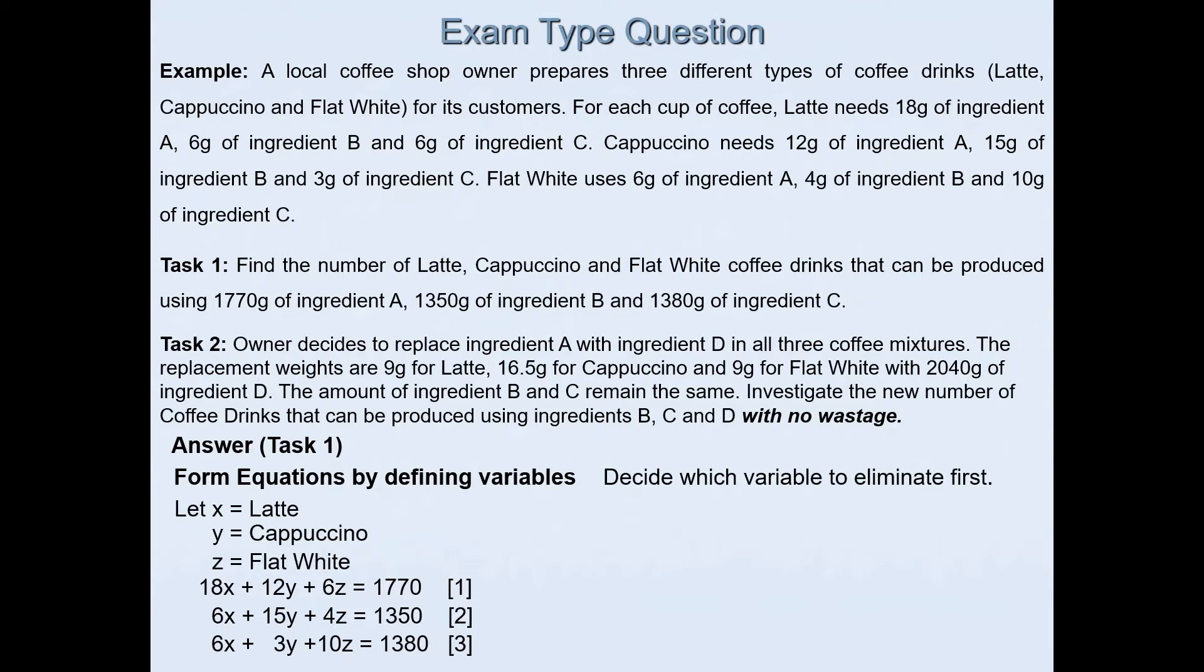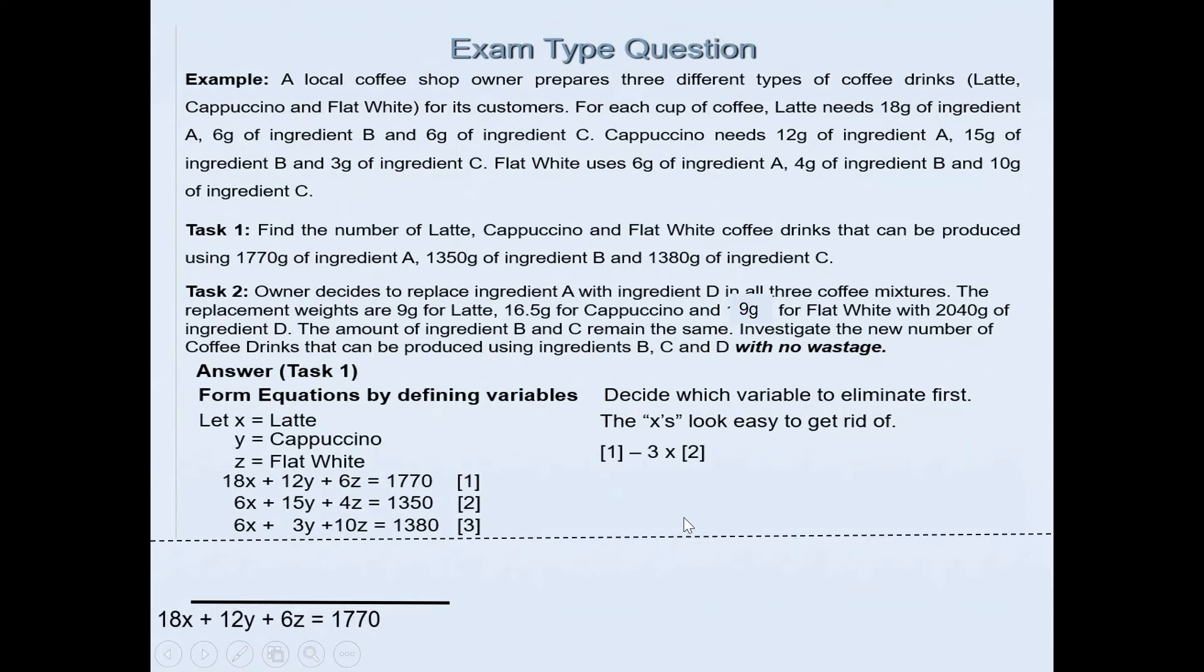What we need to do is decide which variable to eliminate first. If I look at these variables, it's easier for us to eliminate variable x. If I take equation 1 and multiply the second equation by 3 and subtract the two, I will be able to eliminate variable x because they will have the same coefficient. 6 times 3 will give me 18, so those will cancel out if I subtract them.